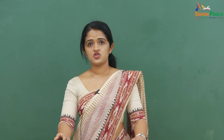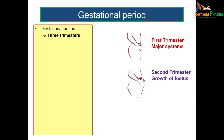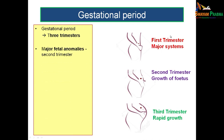The gestational period can be divided into three trimesters, each having three months. The first trimester is the first three months, the second trimester is from the fourth to sixth month, and the third trimester is the last three months — that is, seven to nine months of intrauterine period. The first trimester is when the major systems of the fetus are developed.